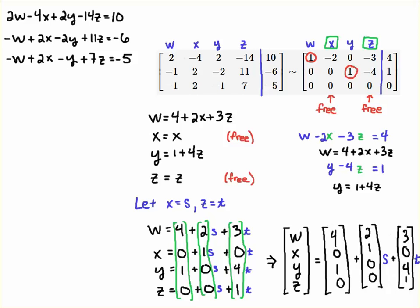All right? So this makes it clear that you have a free parameter so you can let these be any value and you see that your solution W, X, Y, Z can be written as what we call a linear combination. It's a combination of these three vectors where S and T are some arbitrary constants. All right? Good luck. Thank you.